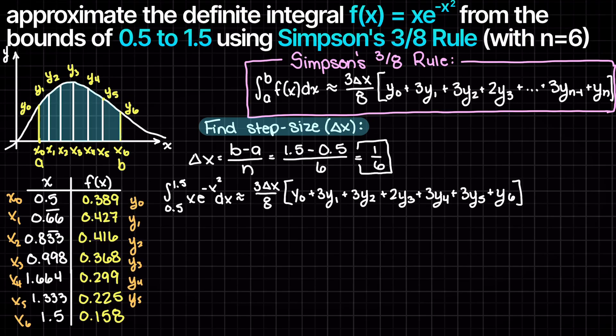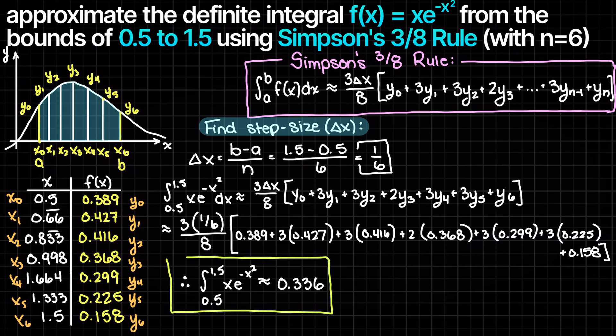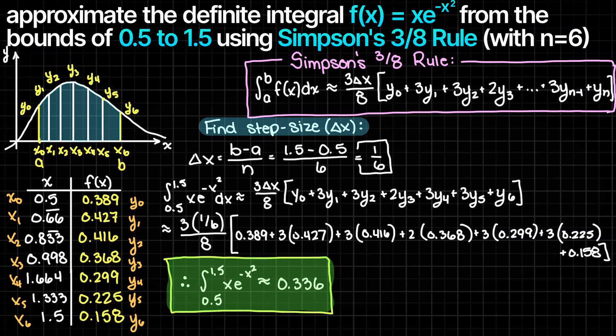We are now ready to begin solving our problem. Let's plug in all our values and simplify. This results in an approximating definite integral of 0.336.